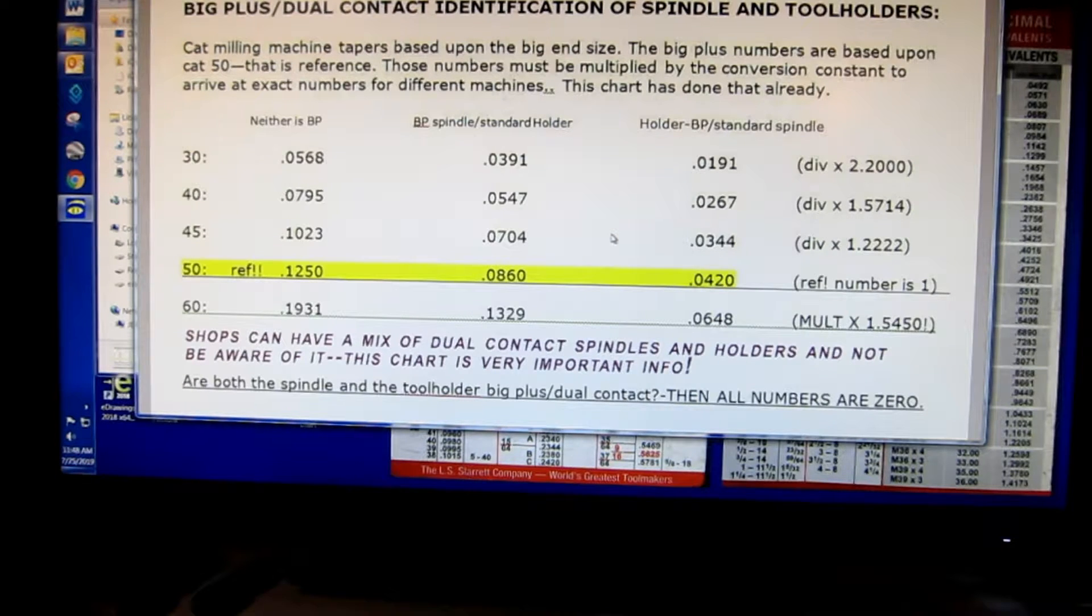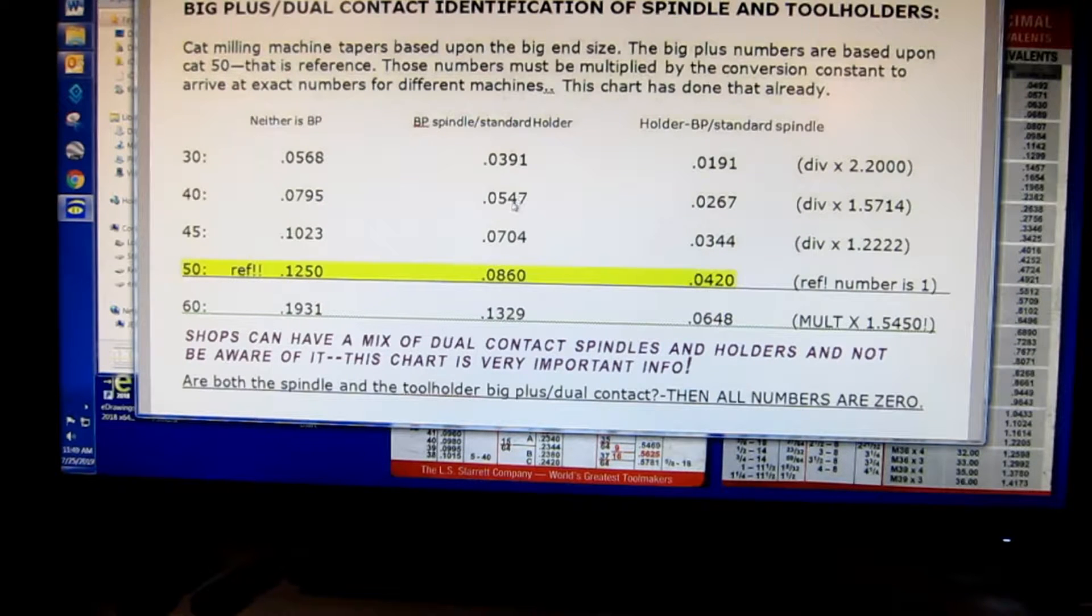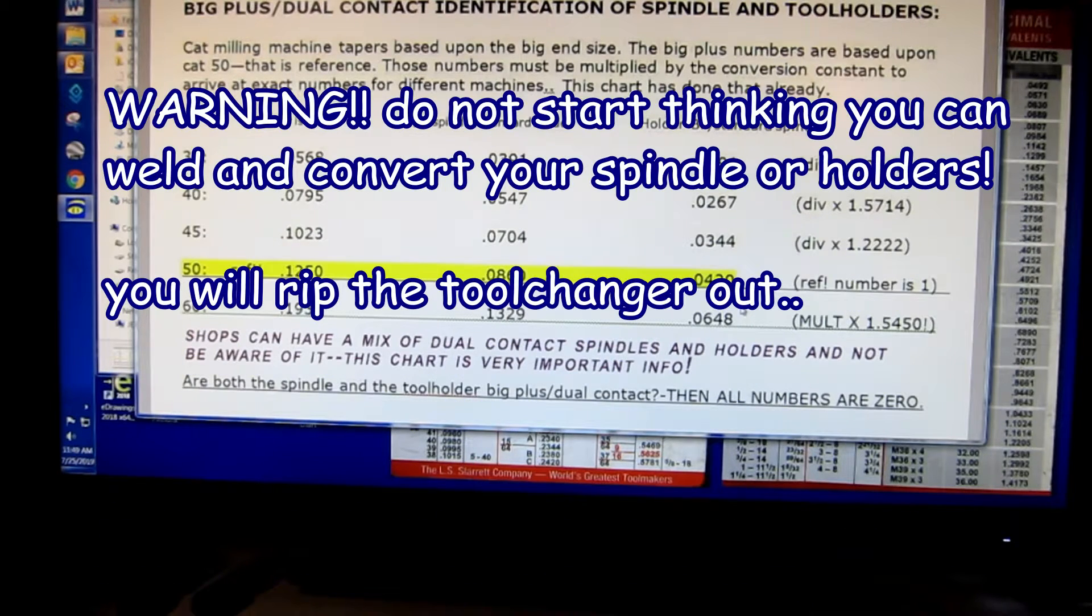I forgot to mention that a big part of the video is that I worked out all the information on Big Plus dual contact spindles, because in shops there can be a mix of machines that can have a Big Plus spindle where they can get dual contact holders and they don't even know it. They don't know what the machine is. So this chart here that you'll see, ignore this part, this video right now of me talking, but go by this that I attach.